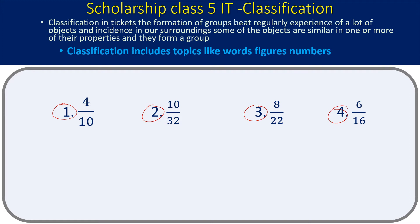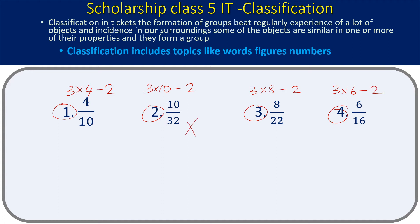Let's check: 3 × 4 = 12, minus 2 = 10. So 4/10 works. 3 × 10 = 30, minus 2 = 28 — that's not 30. So 10/30 is the odd one. Check the others: 3 × 8 = 24, minus 2 = 22 — correct for 8/22. 3 × 6 = 18, minus 2 = 16 — correct for 6/16. In all other cases, numerator multiplied by 3 minus 2 gives the denominator. So 10/30 is odd.